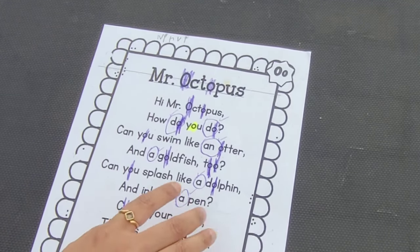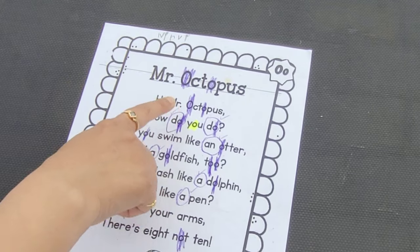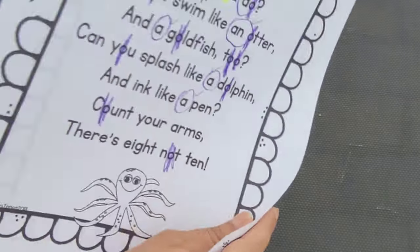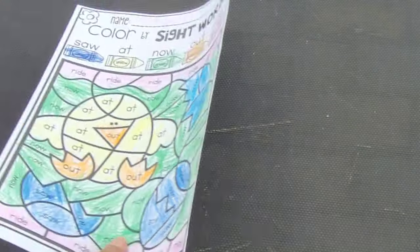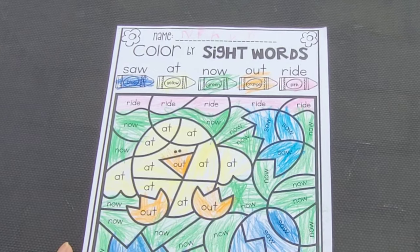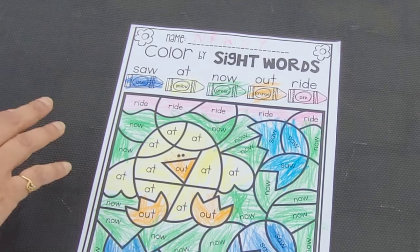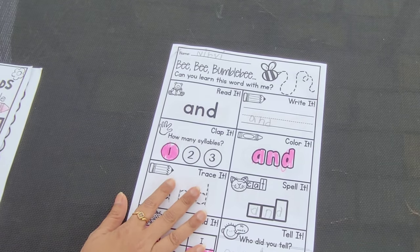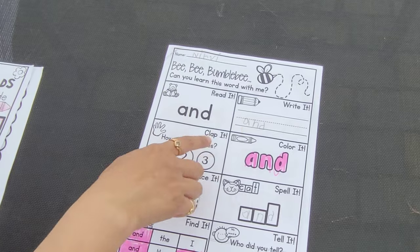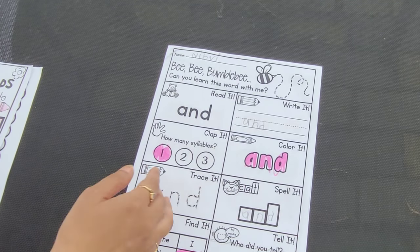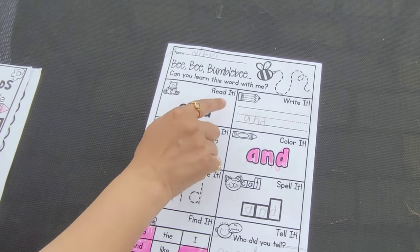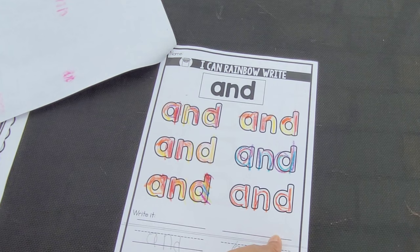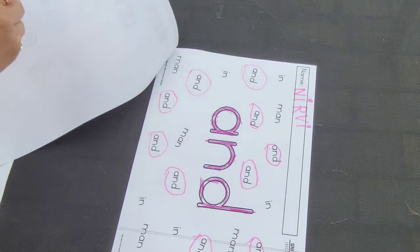Another sight word activity is an octopus activity where the kid has to find the letter O and also identify sight words. There are many different poems related to this that you can Google and make a small activity from. Another sight word activity involves making a picture and asking kids to sort and color letters accordingly. There's also a bumblebee activity where they find letters, count syllables, color, and trace to spell a word multiple times so it gets printed in their mind.